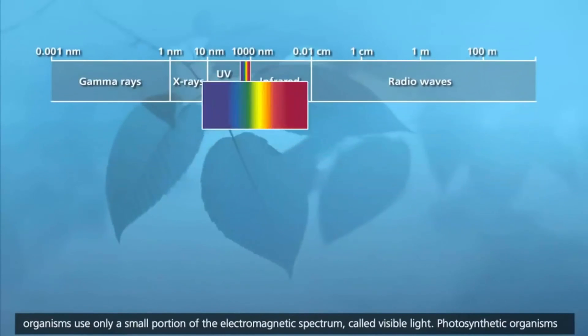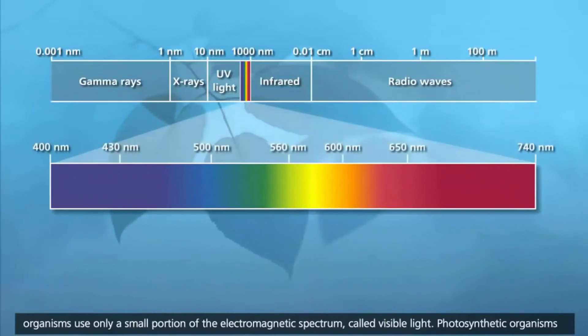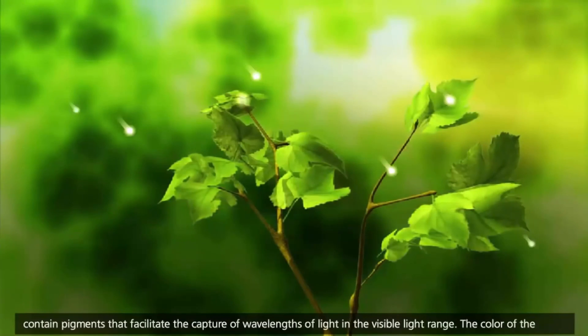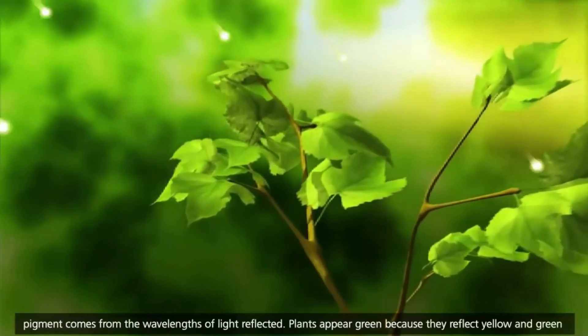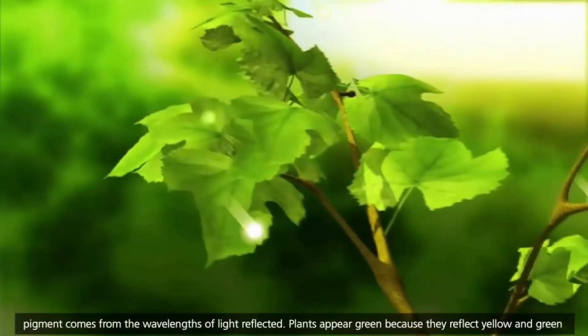Photosynthetic organisms use only a small portion of the electromagnetic spectrum, called visible light. Photosynthetic organisms contain pigments that facilitate the capture of wavelengths of light in the visible light range. The color of the pigment comes from the wavelengths of light reflected.